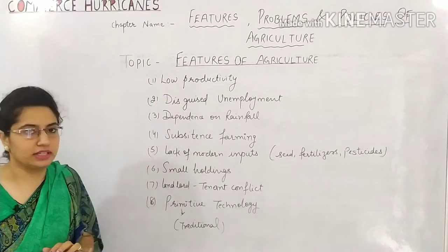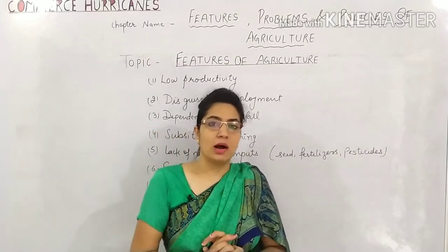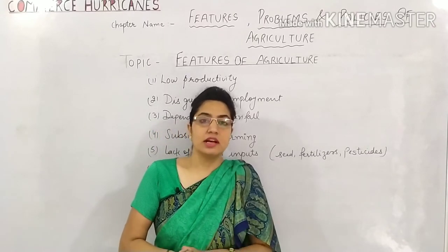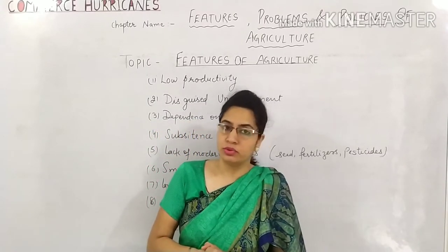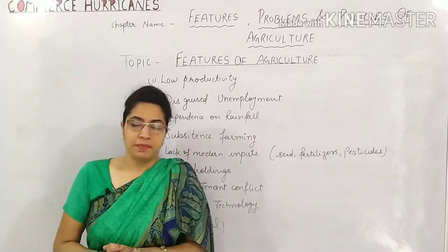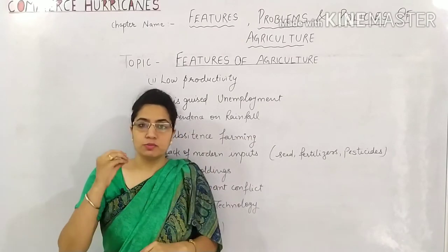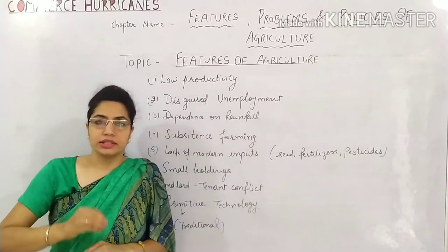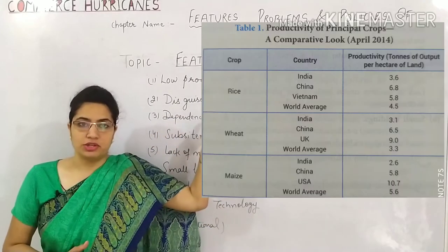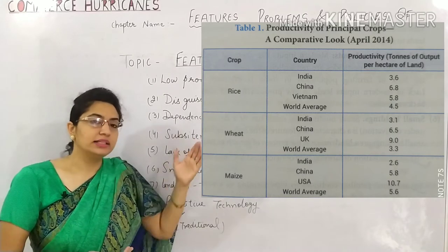The first point is low productivity. India's production is low. We don't have good irrigation facilities, and we don't have good technology, which is why our production is going down. Compared to other countries, India's production is very low. Production is measured by how much output is coming from one acre of land. As you can see in this picture, India has low rice and low wheat production compared to other countries.